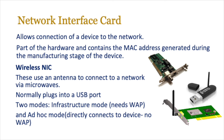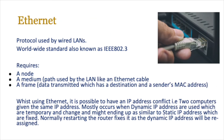Infrastructure mode is what you use when connecting to the school network, and ad hoc could be something like connecting two devices together or using a Bluetooth equivalent. Ethernet is the backbone of local networks. It's a protocol — do not confuse it with the Ethernet cable, which is something different. Ethernet is used by wired local area networks and is a worldwide standard, also known as IEEE 802.3. It requires a node, which is a computing device; a medium, which is a path typically using an Ethernet cable; and a frame, which contains the data transmitted along with the destination and sender's MAC addresses. When you send a file, it's broken into data packets, put into a frame with the destination and sender's MAC address, and transmitted down the Ethernet cable.